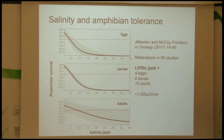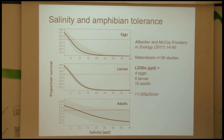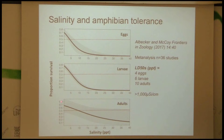From a meta-analysis looking across many amphibian species, the egg stage, the larvae, and the adults have different tolerances to salinity — with the egg being the most sensitive, then larvae which develop physiological mechanisms to tolerate higher salt levels, and adults which can tolerate much more. So depending on where you are in the life history, you have different tolerances to salt.